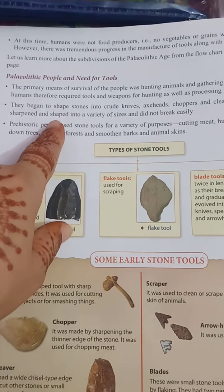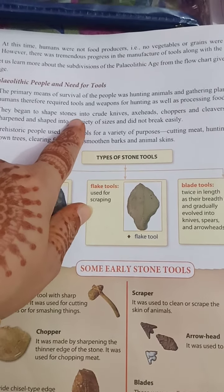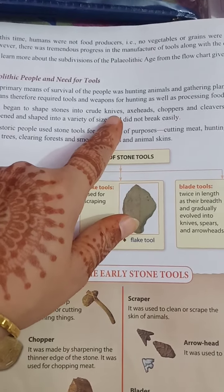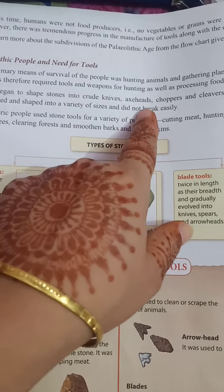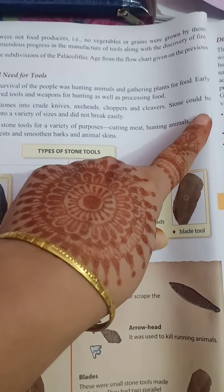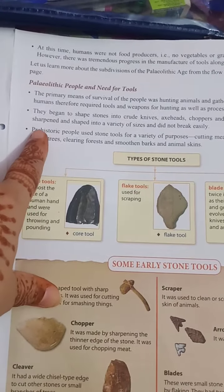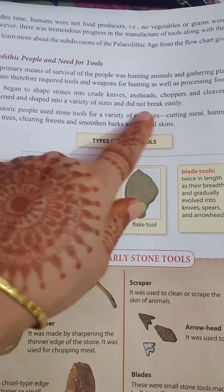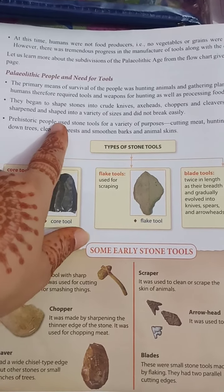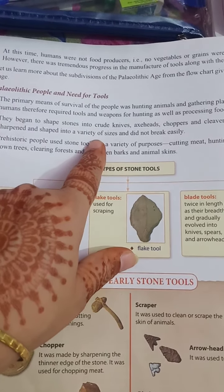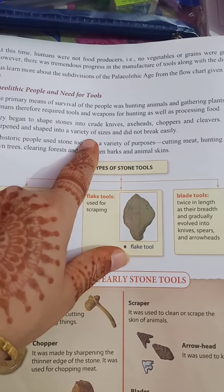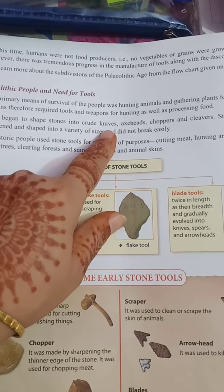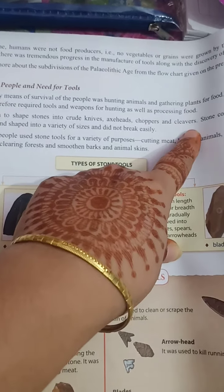They began to shape tools into crude knives, and after that they learned how to make crude knives, axe heads, choppers, and cleavers. Stone could be sharpened and shaped into a variety of sizes and did not break easily. So stones were used because they can be sharpened easily and cannot be broken easily. They made knives, axe heads, choppers, and cleavers.